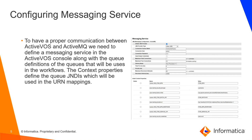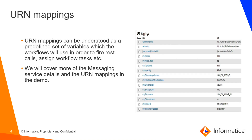The last step is URN mappings. URN mappings are predefined variables which workflows use in order to fire REST calls. For example, we have a URN mapping called 'urn:p360.rest.url' where we define a REST URL used by the Activos workflow to fire REST calls on P360 services. We will cover more on the URN mappings in the demo.